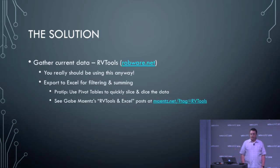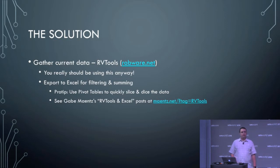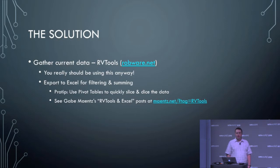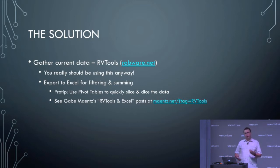As a solution, what I started with — even when running the numbers by hand — was RVTools. I think a lot of people are probably familiar with that. If you're not, get familiar with it. It is a great free tool for gathering basically any data that can be gathered through the vCenter and then through the APIs. It gathers that for you, and then what's really nice is it can export all of this to Excel, so you can do filtering, summing up, and really come to your current numbers pretty quickly.